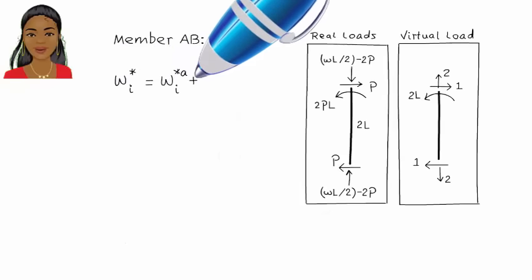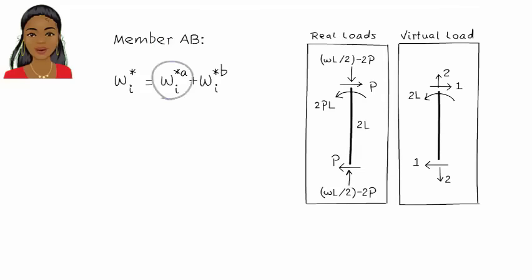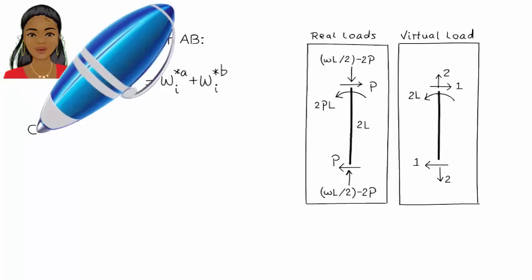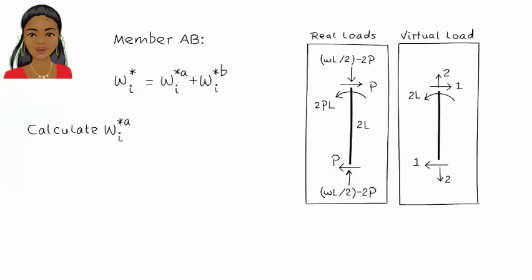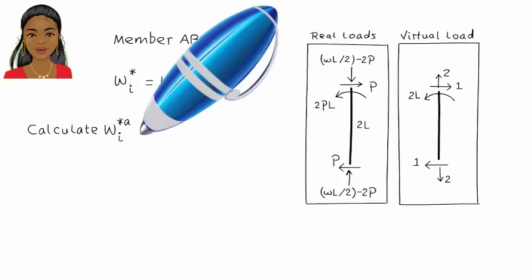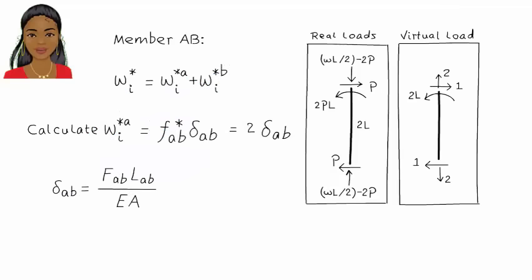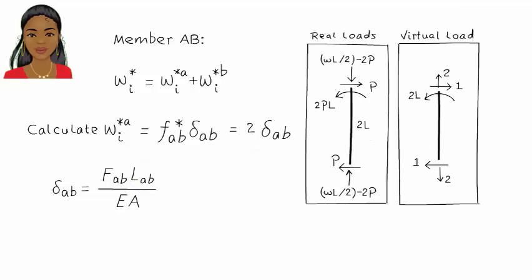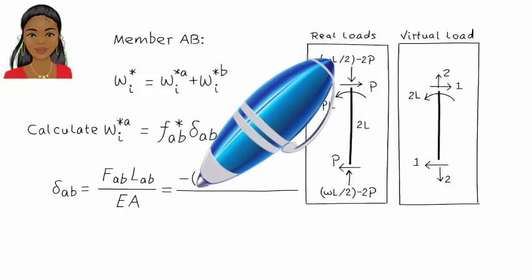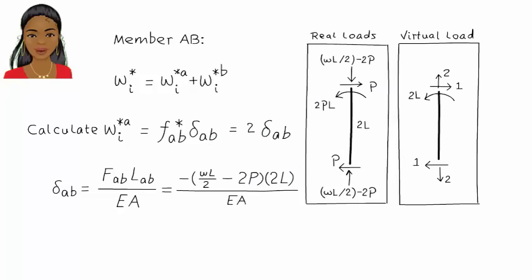For member AB, internal virtual work has two parts: a part due to axial deformation and a part due to bending. To determine virtual work due to axial deformation, we treat the member as a truss element. So internal virtual work equals F* AB times delta AB, where F* AB is the member's axial force due to the virtual unit load, and delta AB is the member's elongation due to the real loads. Here, F AB is the axial force in the member due to the real loads, L is the member's length, E is the modulus of elasticity of the material, and A is the member's cross-sectional area. Then the member's internal virtual work due to axial deformation is calculated accordingly.